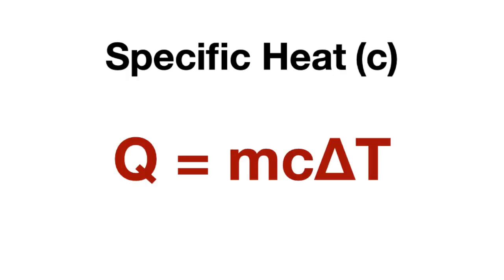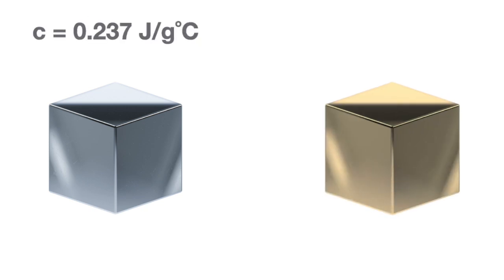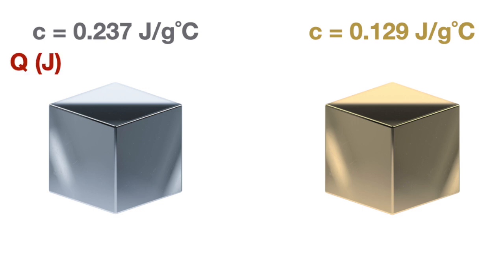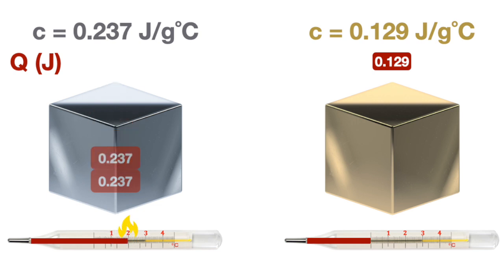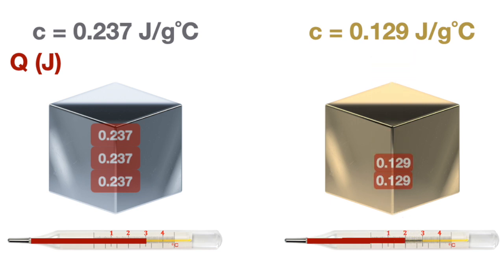To demonstrate what specific heat is, suppose we have one gram of silver and one gram of gold. The specific heat of silver is 0.237 joules per gram per degree Celsius, and the specific heat of gold is 0.129 joules per gram per degree Celsius. Now we're going to apply heat to each of these masses and watch the temperature change. Every time silver absorbs 0.237 joules of heat energy, it increases by one degree Celsius, and gold only requires 0.129 joules to increase by one degree Celsius.